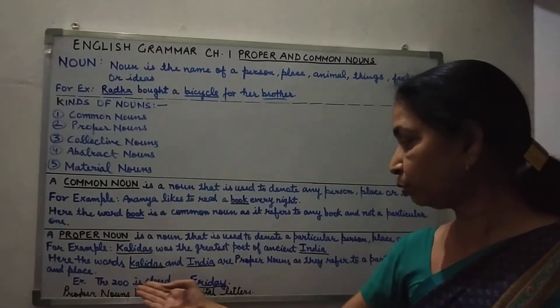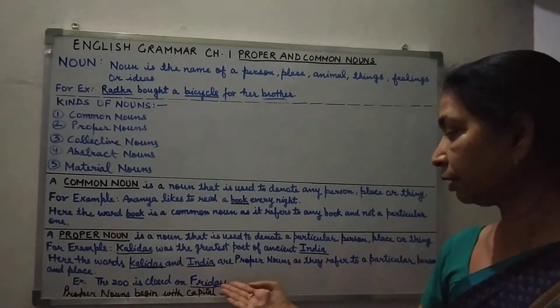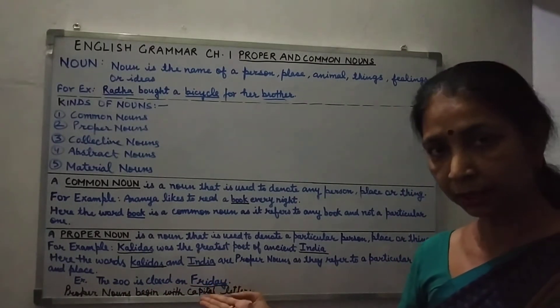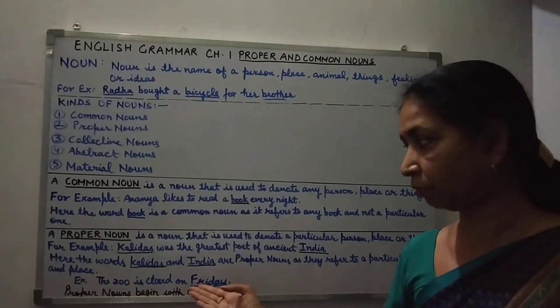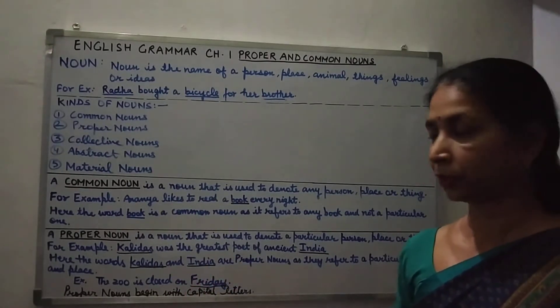One more example: The zoo is closed on Friday. Here Friday is the proper noun — it's the name of a day.